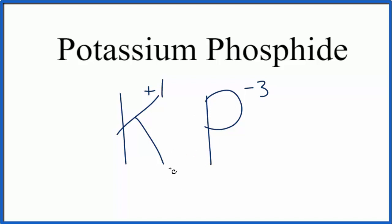To do that we can change the subscripts. If I put a 3 here for the potassium, 3 times plus 1 gives me plus 3, and that'll cancel out the minus 3. That'll give me a net charge of 0, and that makes this the correct formula for potassium phosphide.